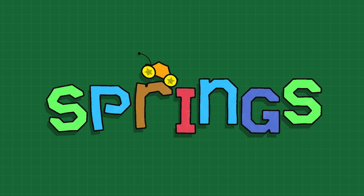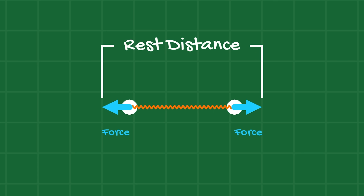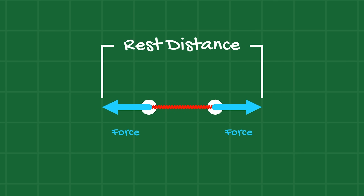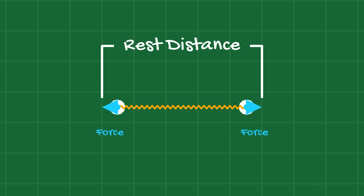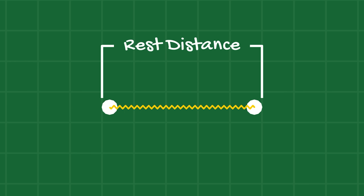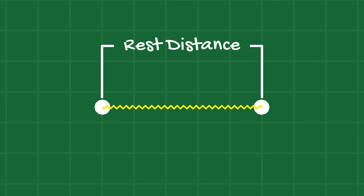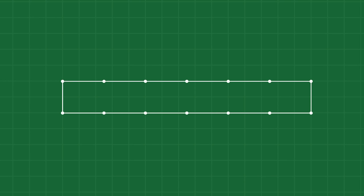Springs are one of the main methods we're going to use to have objects actually keep their shape. A spring is really nothing more than a force — it wants to keep two objects at a certain distance apart. You have a rest distance: the distance these two point masses would like to be. If you squish them together or pull them apart, a force is created that acts on both points to pull or push them back to their rest distance. You decide what the rest distance is and how strong the spring is. So we can take our shape, go all the way around the edge, and replace all the edge lines with springs.